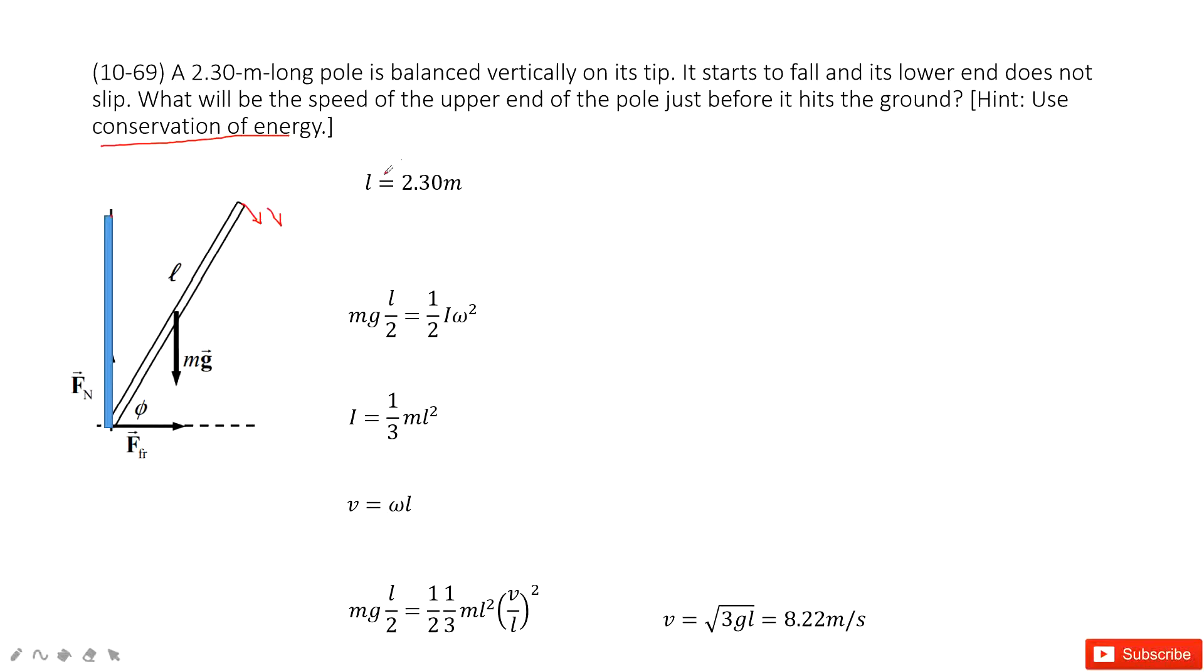So what quantity is given? The L, the length of the rod. Now we consider conservation of energy. Initially, what is the energy? This energy comes from the potential energy. So MgH, where the distance above the ground is just half of L.